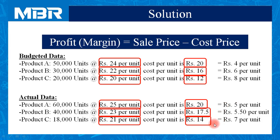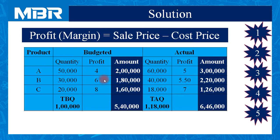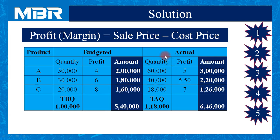Let us prepare the table. Products A, B, C with budgeted quantities of 50,000, 30,000 and 20,000 as given in the question. Budgeted profit per our calculation is Rs. 4, Rs. 6 and Rs. 8. So budgeted amount of profit is 50,000 multiplied by 4 equals Rs. 2,00,000; 30,000 multiplied by 6 equals Rs. 1,80,000; and 20,000 multiplied by 8 equals Rs. 1,60,000.